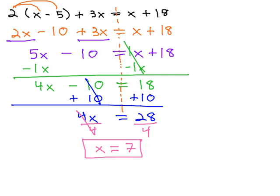As usual, we can always check our solution by going back to the original problem and plugging 7 in. Let's see if it gives us a true equation. The original problem was 2 times x minus 5. We just found out x was 7.